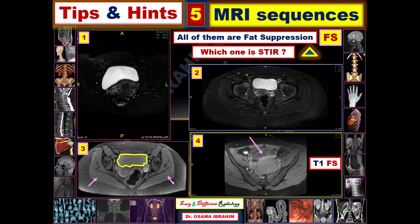Muscle has high concentrations of protons, so this is called the proton density image with fat suppression. The sequence here, number three, is proton density fat suppression.